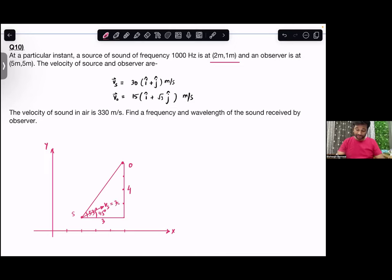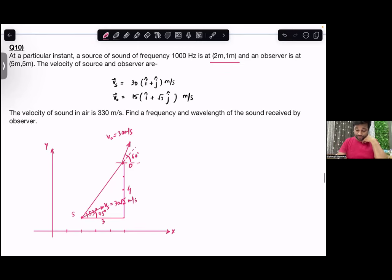The observer moves 15 i-cap, 15 root 3 j-cap. So net velocity is 30 - the velocity of observer is 30 meter per second. This is velocity of observer, and if you look at this angle it is 60 degrees, because root 3 j-cap and 1 i-cap. This angle here is 7 degrees because this angle was 53 degrees and this angle is 8 degrees.